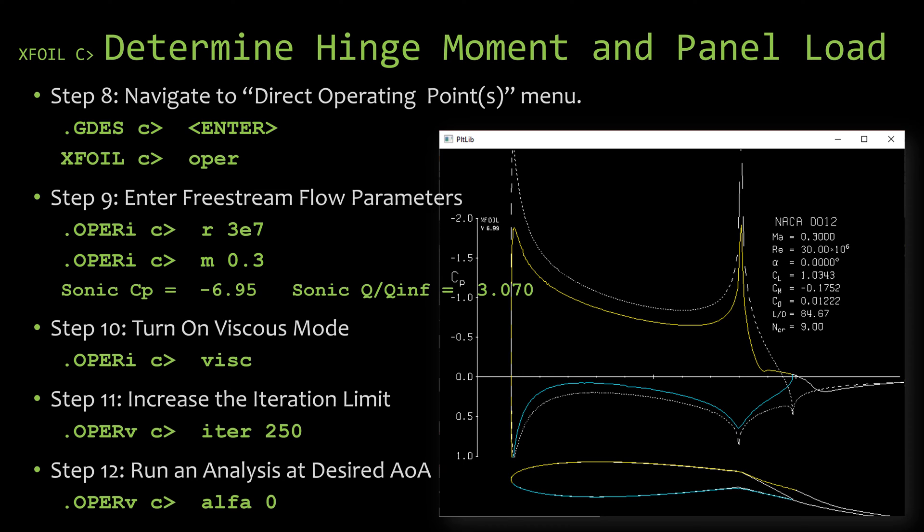So I type in 'alpha 0' and hit enter. Then you can see the screen on the right with the results of that run. You can see the white lines which is the inviscid result, the yellow line which is the viscous result of the upper surface, and the blue line which is the viscous result of the lower surface.